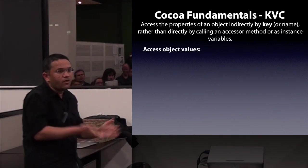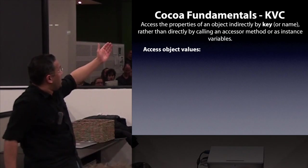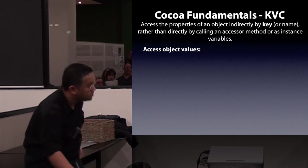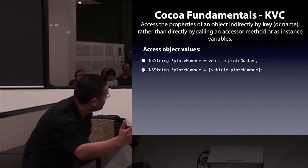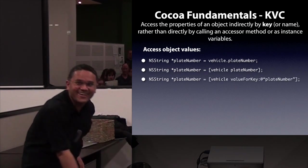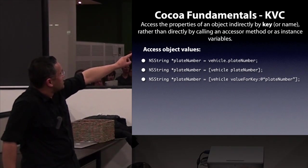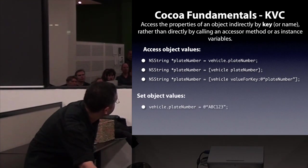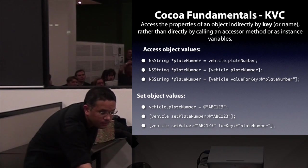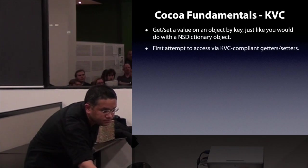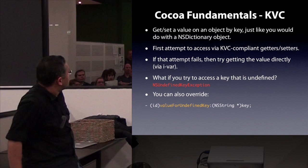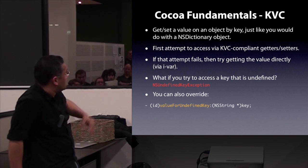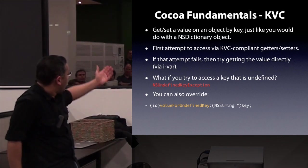The idea behind Key Value Coding is fairly simple. Rather than directly calling an accessor method or instance variable, you access it by a key name — a string. For example, instead of the normal dot-notation or bracket approach, you use valueForKey: to get the same result. For setting, you use setValue:forKey:. If you don't have KVC-compliant getters and setters, it tries to get the value directly, and if it's undefined you get an NSUndefinedKeyException.